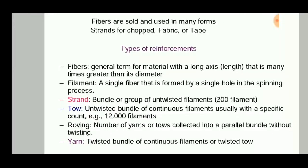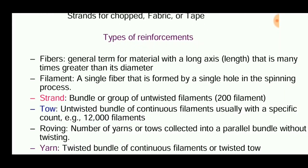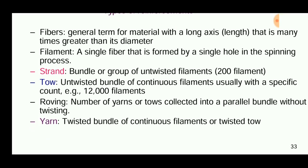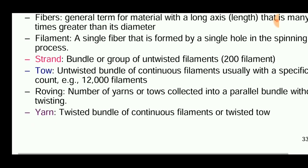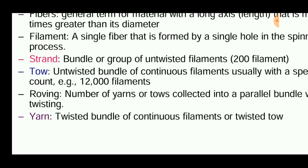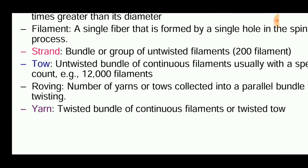Types of reinforcements: A fiber is a general term for material whose long axis is many times greater than its diameter. A filament is a single fiber formed by a single thread. A strand is a combination or group of untwisted filaments. A tow is a bundle or group of continuous filaments or strands. Roving is a number of tows grouped together. Yarn is a bundle of rovings or a bundle of continuous filaments.